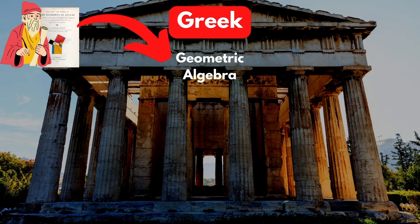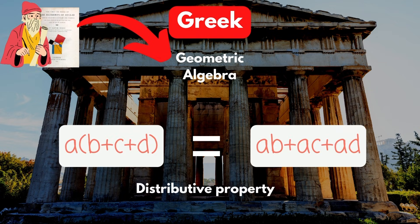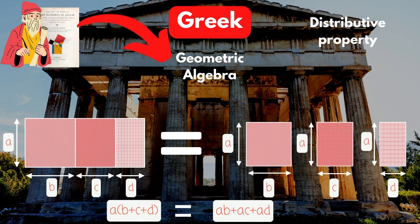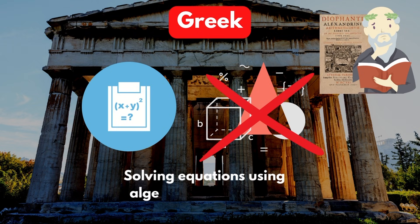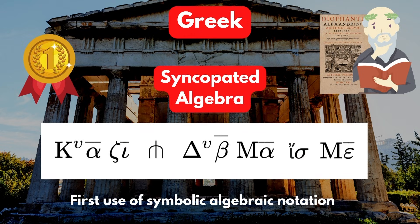Euclid employed the use of what we now call geometric algebra. This involves using geometry to demonstrate mathematical concepts such as the distributive property, which can be shown by splitting a rectangle into separate chunks. Unlike typical Greek mathematicians who used geometric methods, Diophantus solved equations using algebraic quantities. He presented this in a series of writings called the Arithmetica, and presents what is the first known use of algebraic notation and symbolism in what we refer to as syncopated algebra.